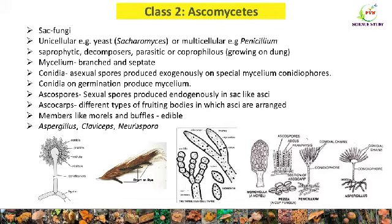Some common examples of Ascomycetes are Aspergillus, Claviceps — which causes the disease ergot of rye — and Neurospora.